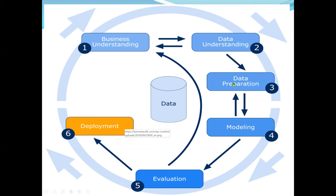We can do something called normalization or resampling of the data. We can also do attribute selection, maybe to reduce the number of attributes. Once the data is ready for mining, the next step is to use a data mining algorithm on the data set to build a model. This will be classification — we always build a model that we will use again for future tasks.